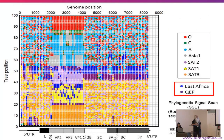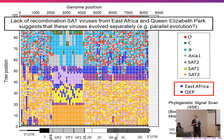Highlighting the two East African areas, we see that they are not recombining much — or not apparently — with viruses in O/A/C Asia 1 or with southern African viruses. Therefore, we suggest that these viruses have evolved separately to the southern African viruses. So, parallel evolution.